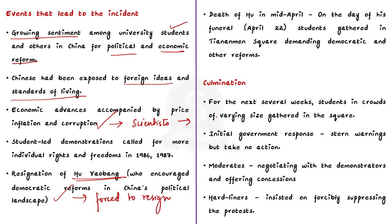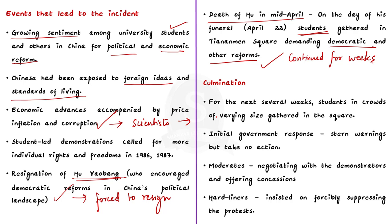Hu Yaobang died in April 1989 and his death acted as a catalyst for protests. He was made to look like a martyr for the cause of political liberalization. On the day of his funeral, tens of thousands of students gathered in Tiananmen Square demanding democratic and political reforms. For the next several weeks, students in crowds of varying sizes gathered in the square. The initial government response was to issue stern warnings but no action was taken.